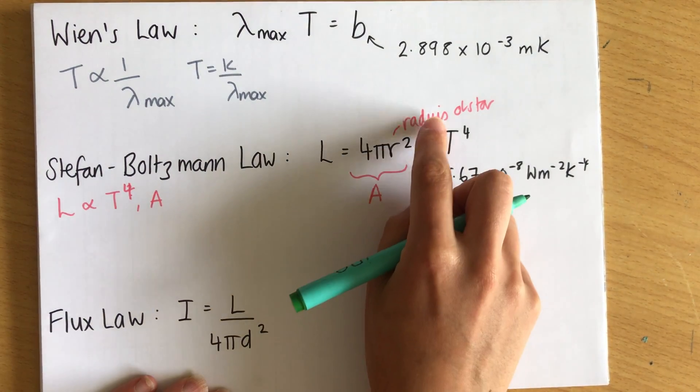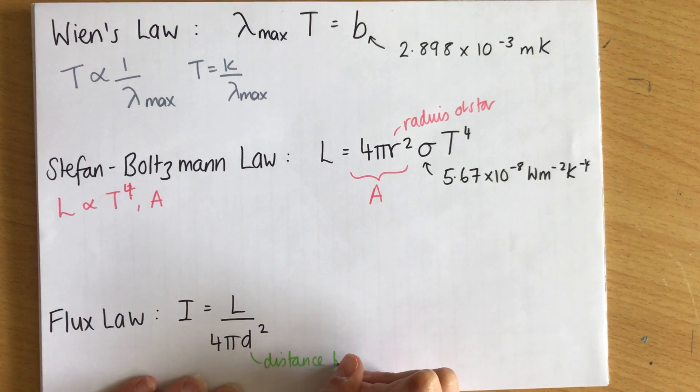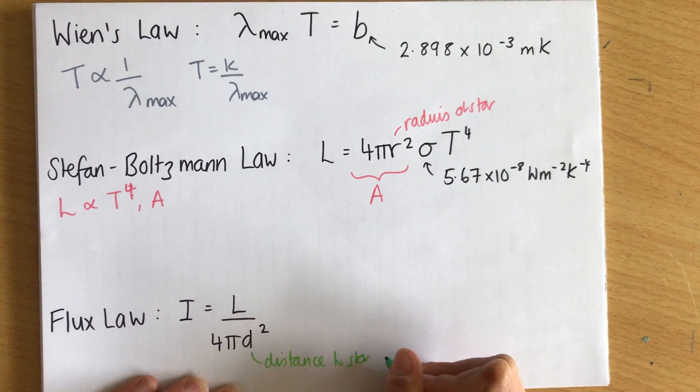This is the distance from Earth to the star. So distance to star from Earth. So they're not the same number. Distance to star from Earth.